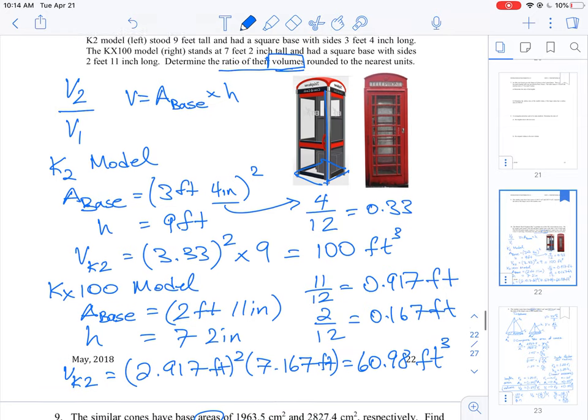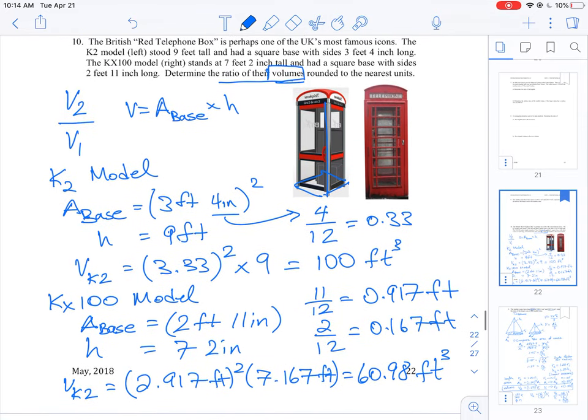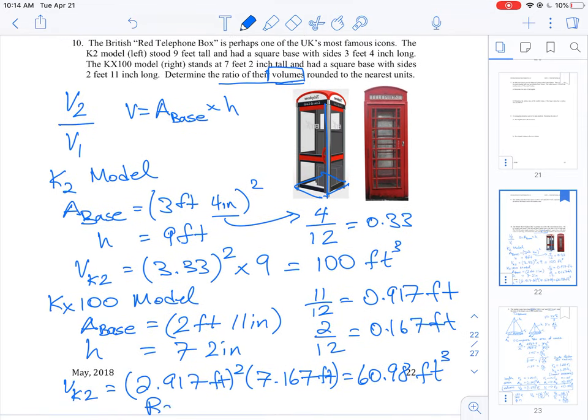And we should get a value of, probably just leave this as a decimal. We can do a hundred divided by 60.98, which is going to give us 1.64 over one. So that means the volume of the large K2 model is 1.64 to the smaller one.